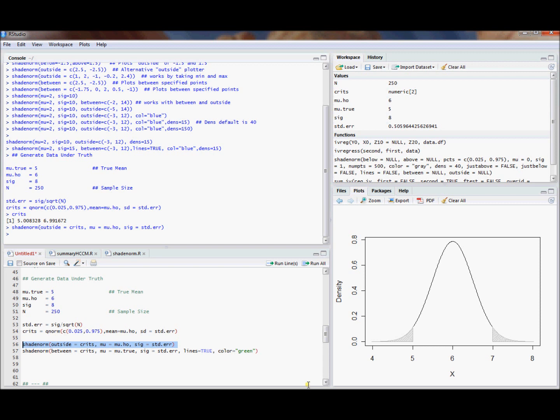We can go ahead and plot a rejection region for this hypothesis test. This is the null hypothesized density centered at the null hypothesized value of 6, and we're plotting the area of the rejection under this density in the rejection region. It's a two-tailed test. We reject if we're less than 5 and greater than 6.99, so greater than 7. That's where we're going to reject.